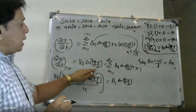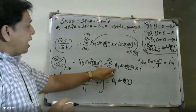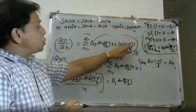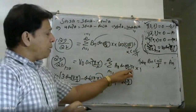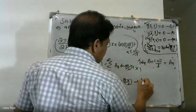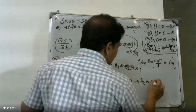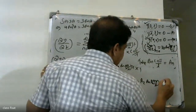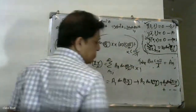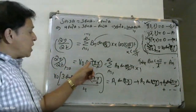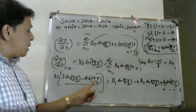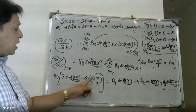Summing from n = 1 to infinity: Σ Aₙ·sin(nπx/L) = v₀·(3·sin(πx/L) − sin(3πx/L))/4. Expanding: A1·sin(πx/L) + A2·sin(2πx/L) + A3·sin(3πx/L) + ... equals the right-hand side.